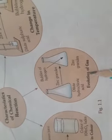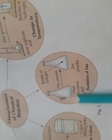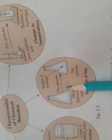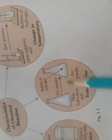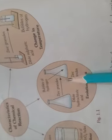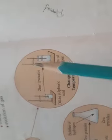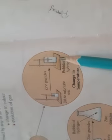Now, the evolution of gas. When dilute HCl reacts with zinc granules in a volumetric flask, the zinc and granules release hydrogen gas. Now, change in temperature — when dilute sulfuric acid reacts with zinc to produce hydrogen gas, heat is observed in the test tube.